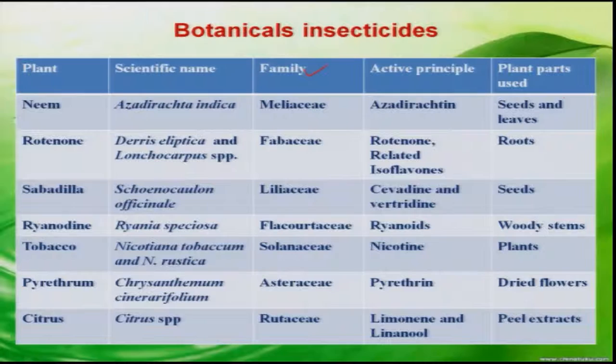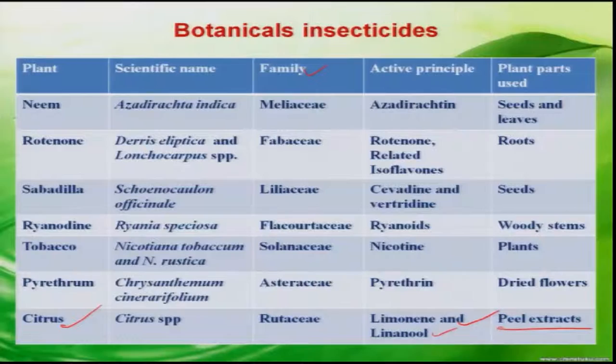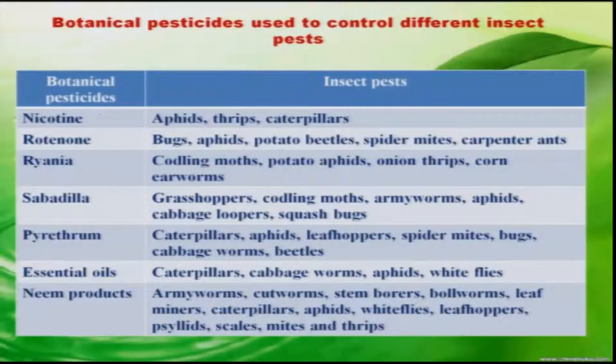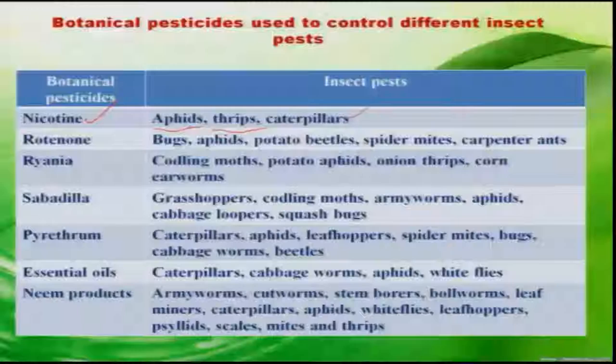One example is citrus, wherein the principal active component is limonene or linalool, obtained from peeling the skin of citrus fruit — peel extracts are effective against some insect pests. Another table shows botanical pesticides with their active components and which insects they are effective against. Nicotine is very effective against both sucking pests and chewing insects like caterpillars. In our next class, we will continue with botanicals in pest management, discussing important botanicals, their use, utilization, drawbacks, and other aspects.